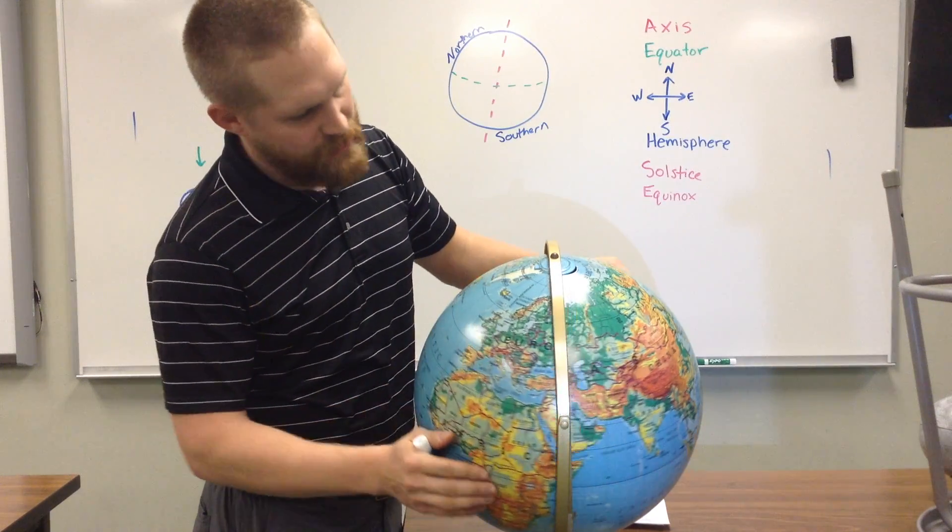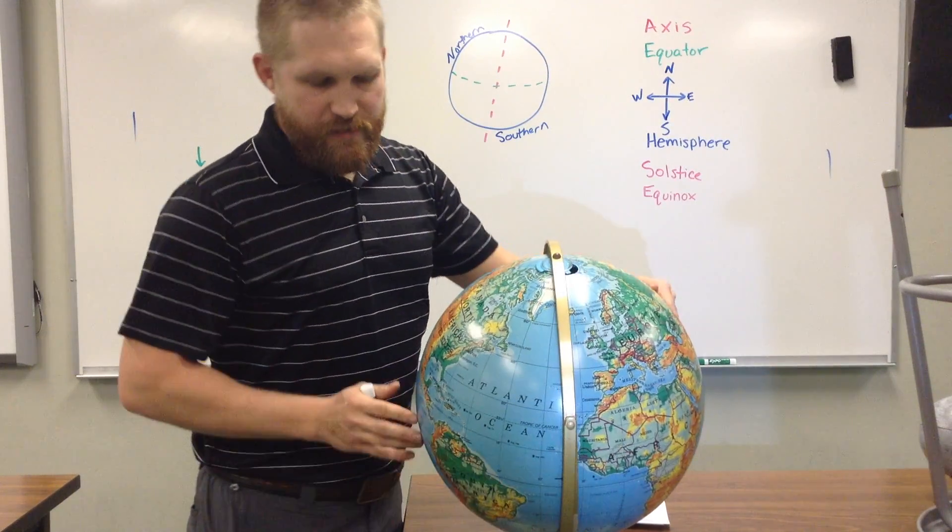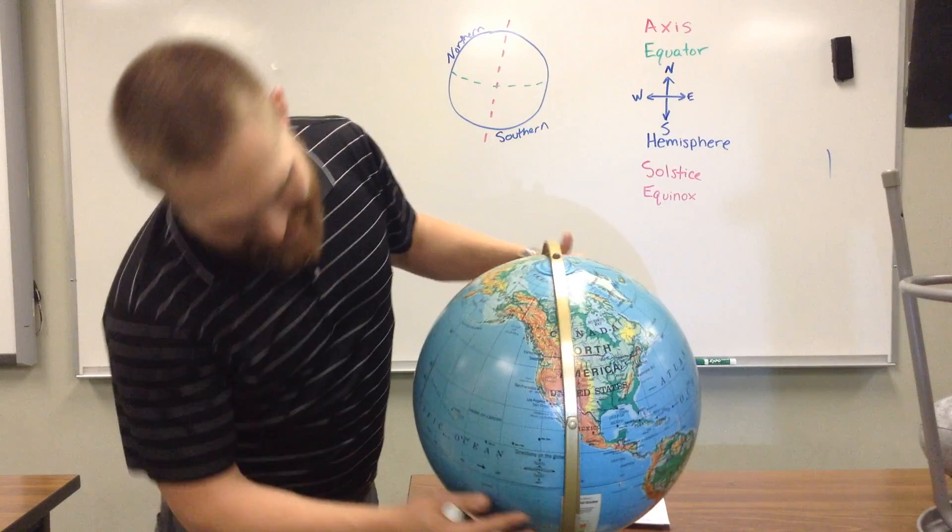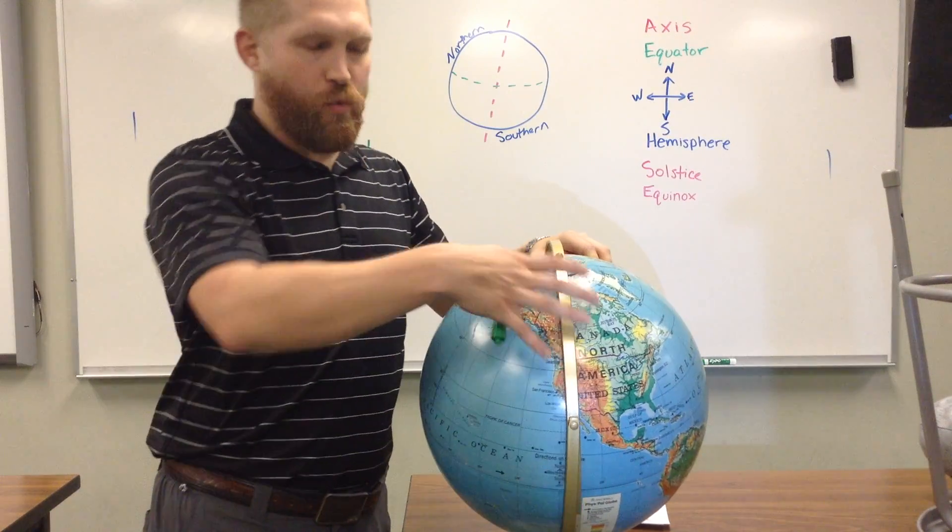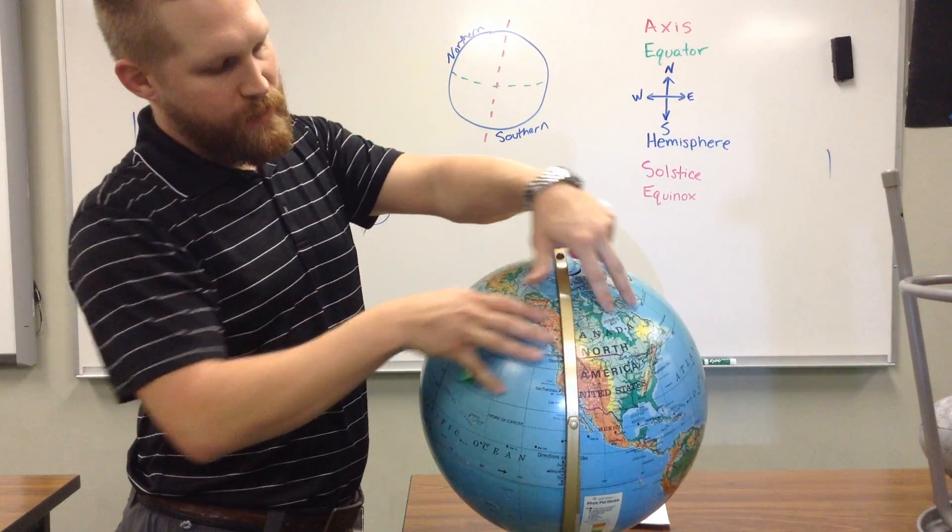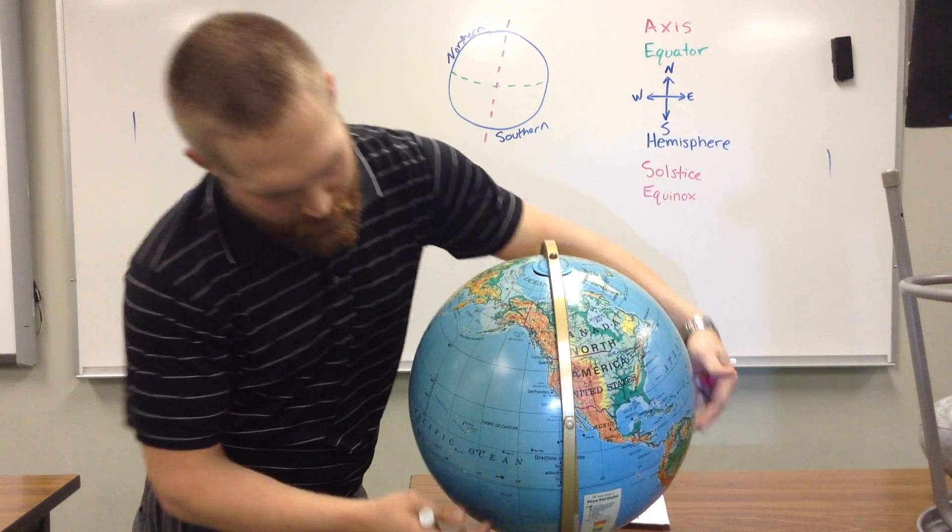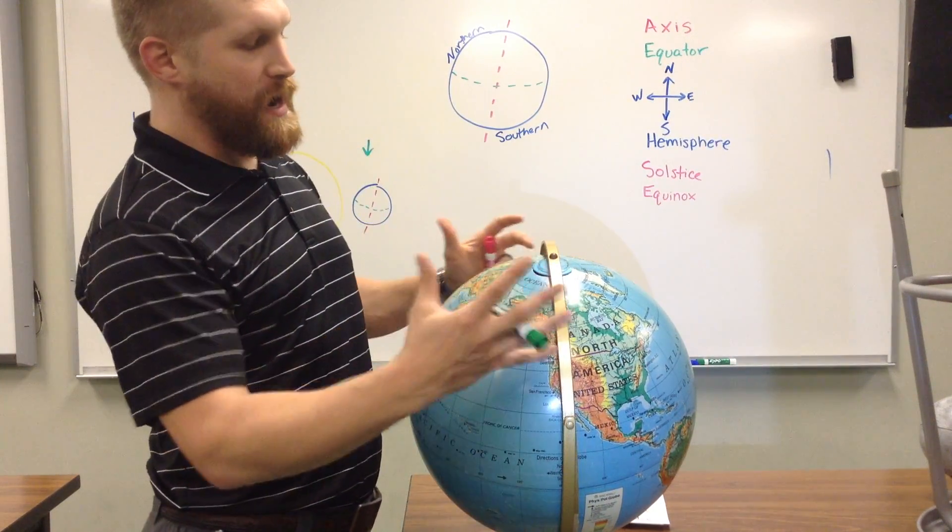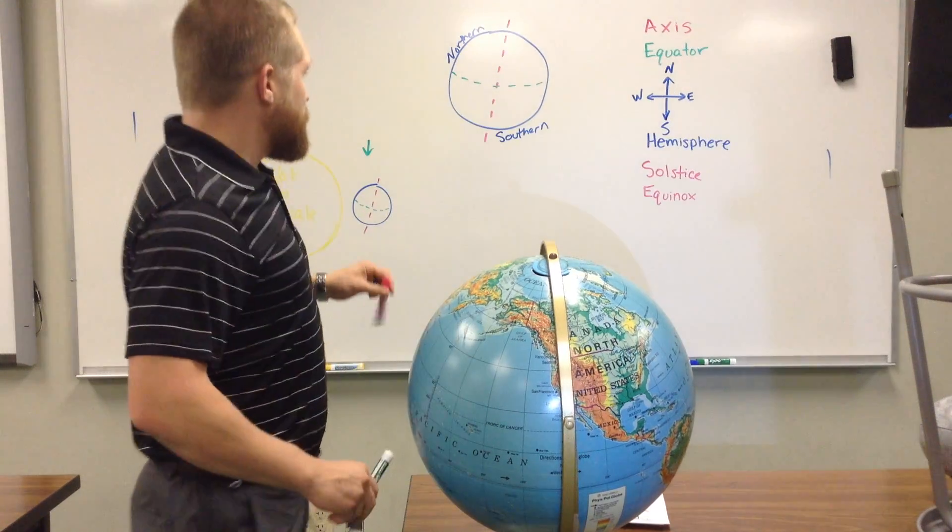So, you're seeing a lot of Russia, a lot of Europe, a lot of the United States and North America, but you're not seeing as much down here. So, that means it's warmer in the northern hemisphere. We call that summertime in the northern hemisphere and wintertime in the southern hemisphere because of the way the earth is tilted.